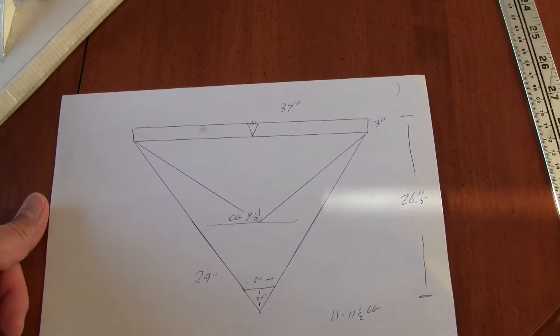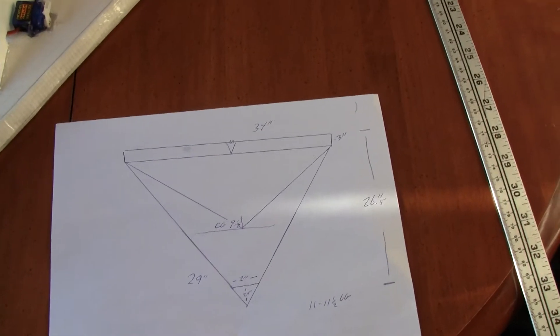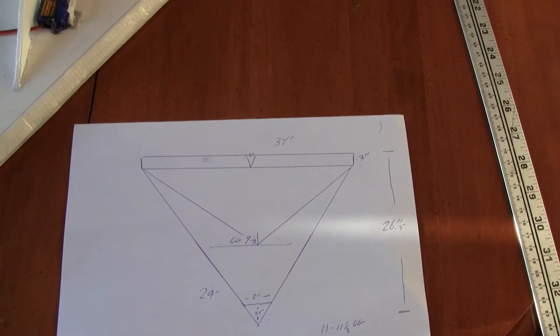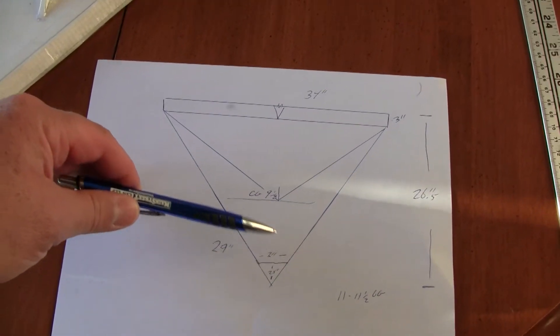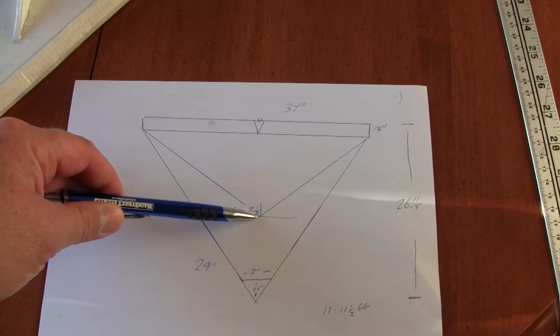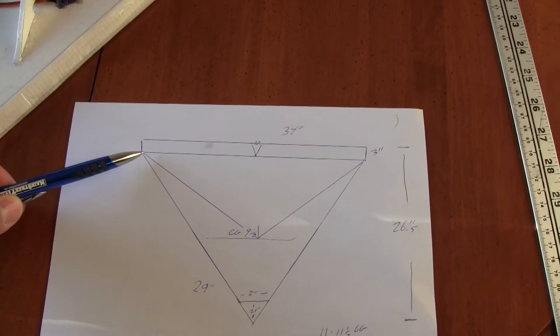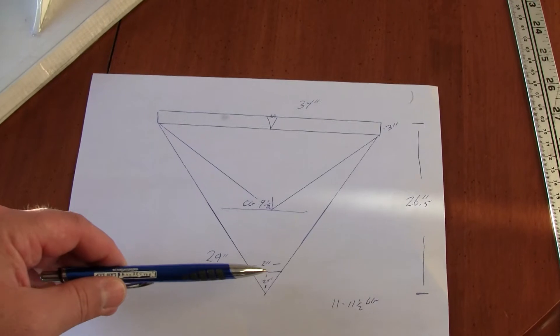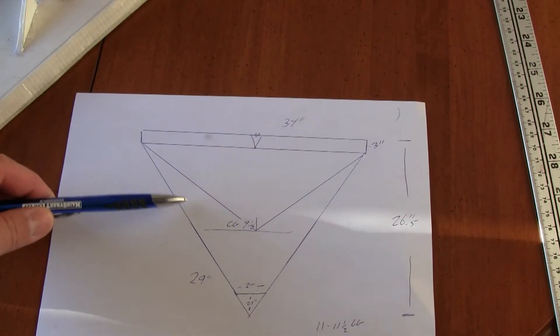You can go to the flying wing CG calculator, just Google that, and you can put these dimensions in and come up with a CG if you have problems with that. From that distance back from the CG to the hinge line, that's the dimensions of the top layer. The bottom layer is full dimensions.